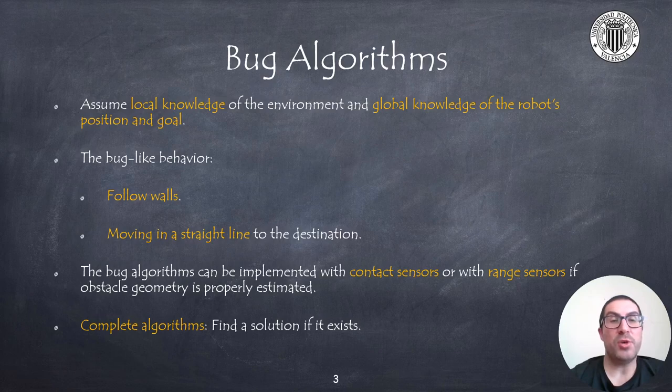Bug algorithms assume a local knowledge of the environment, that is, we do not need to know all the objects in the environment in advance or to compute an offline path in the motion planning problem. They can be implemented online with data coming from sensors.